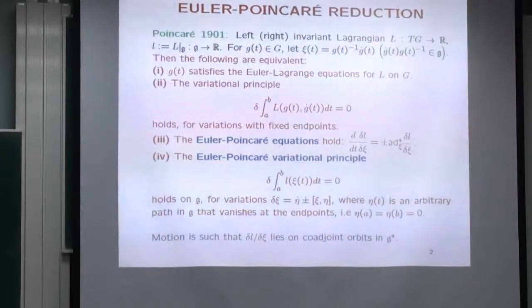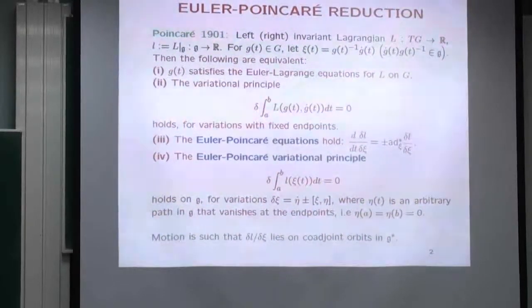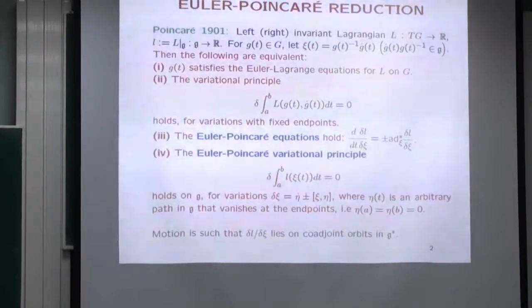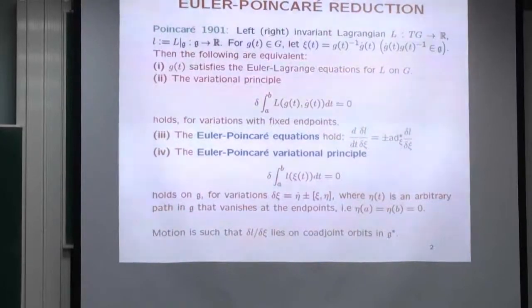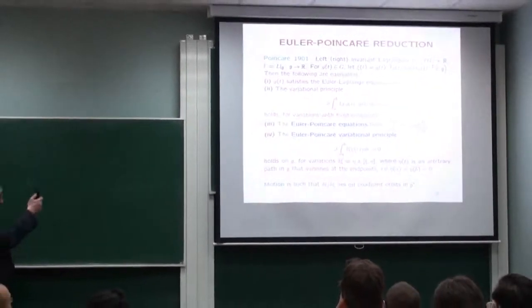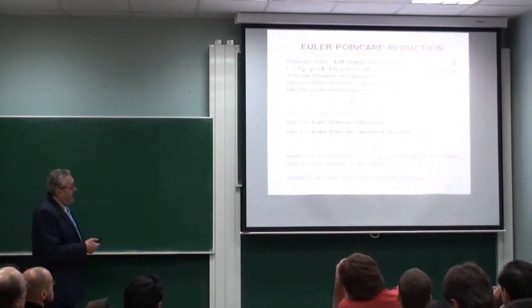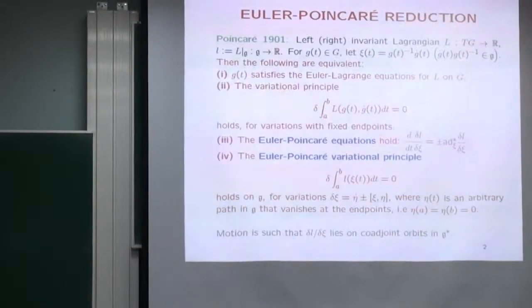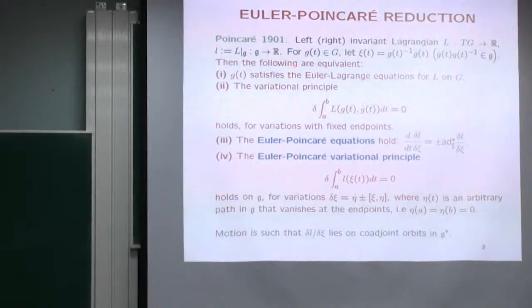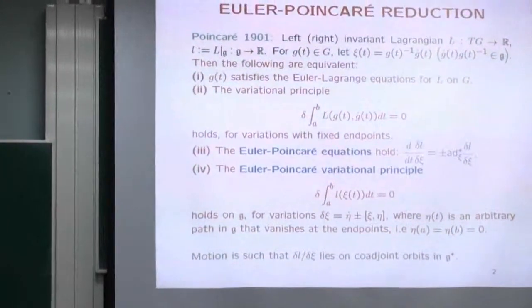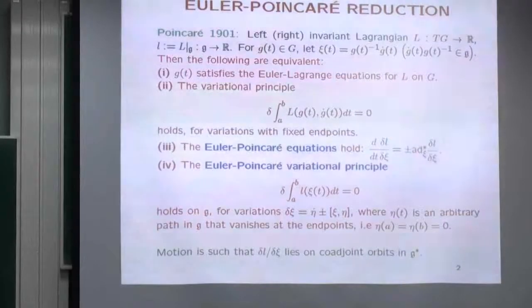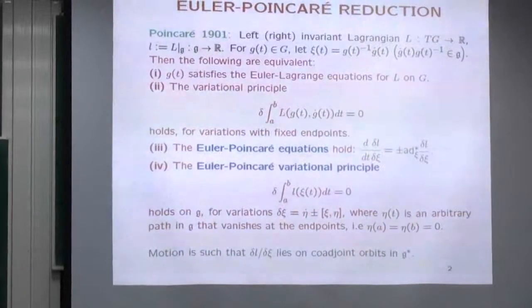G(t) is a curve; take its derivative and bring it back to the identity to get a curve ξ(t) in the Lie algebra, or do it the other way around. I'm obsessed with right versus left because in continuum mechanics this is extremely important — the so-called convective versus spatial representation in fluids, elasticity, liquid crystals, etc. — and there are relative sign changes that matter. But for us it will be very simple.